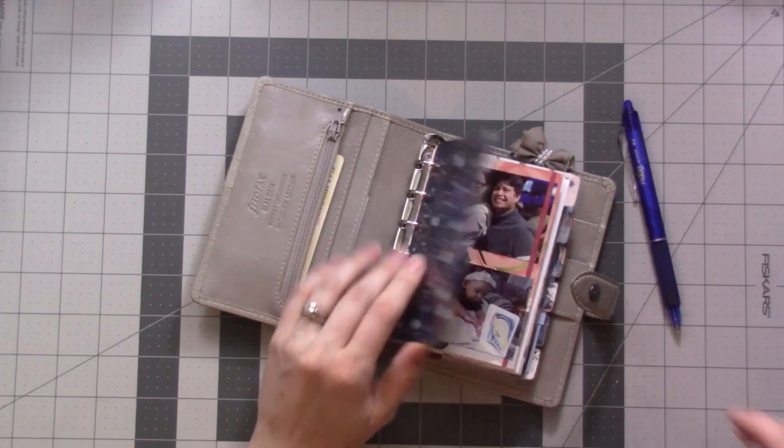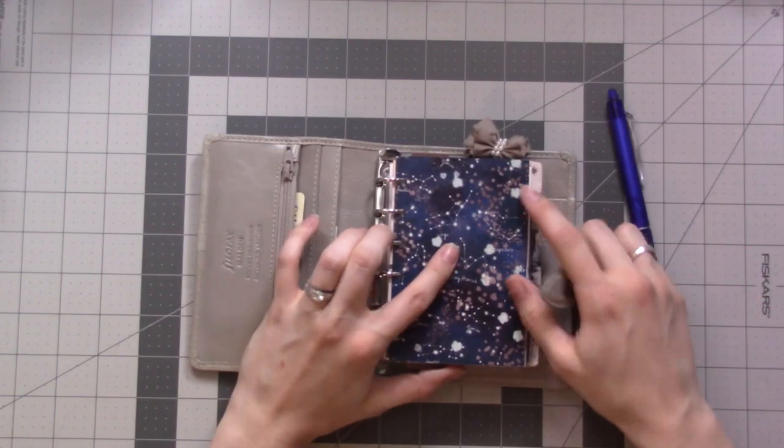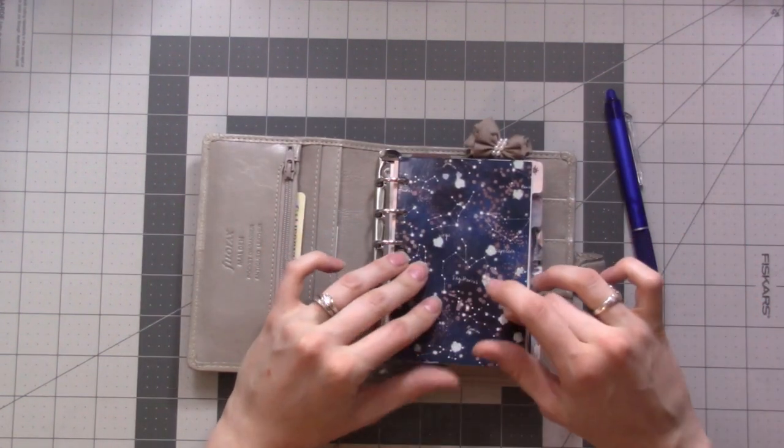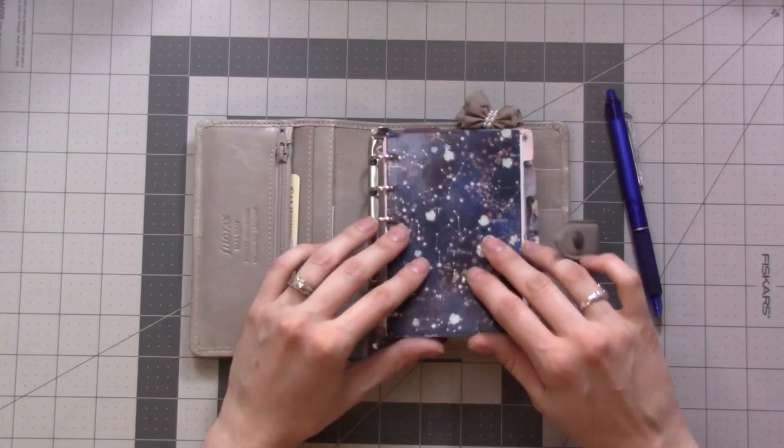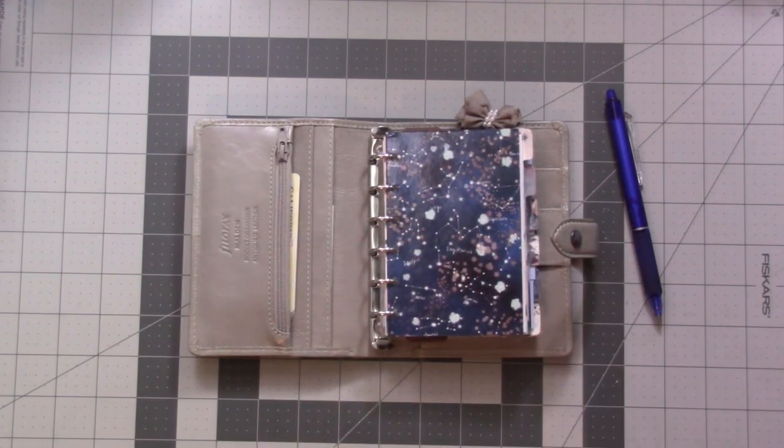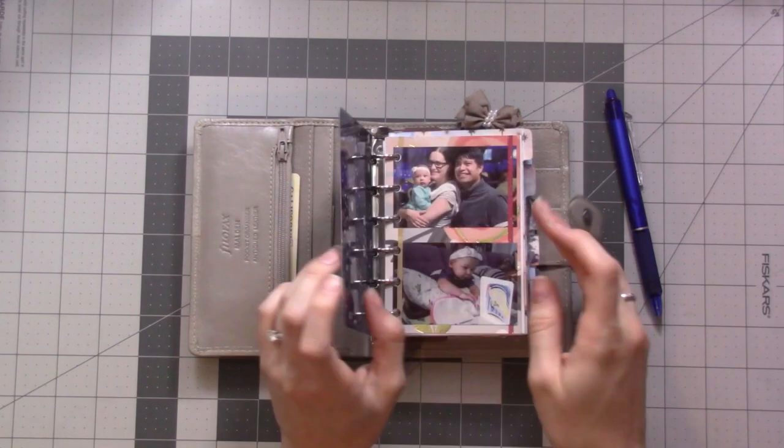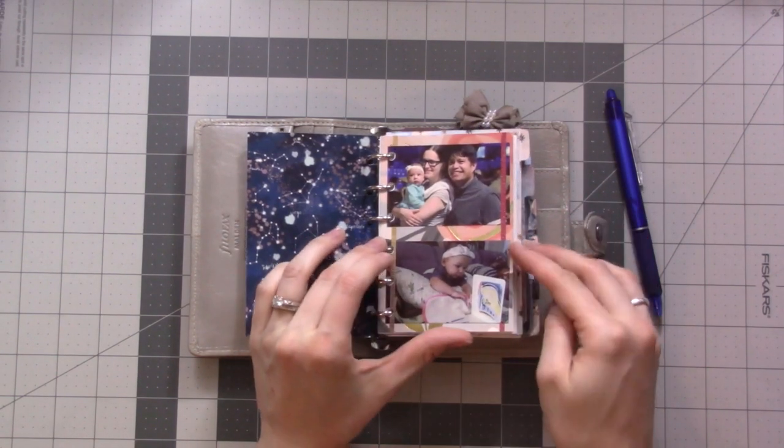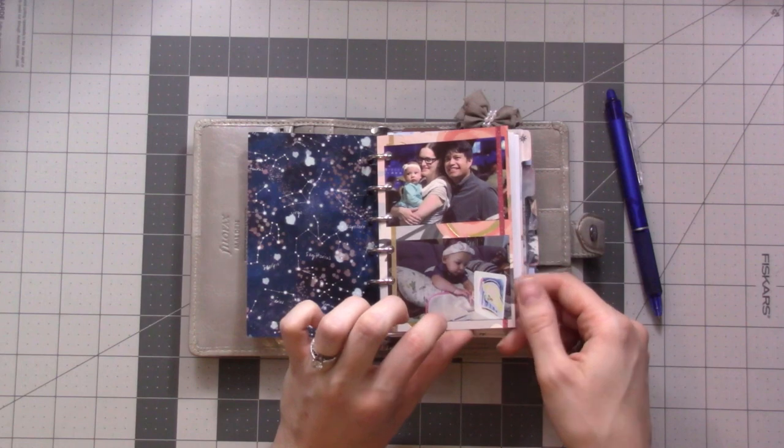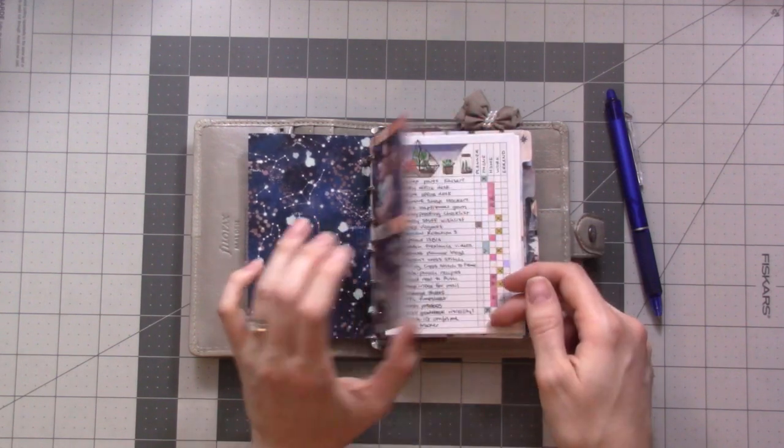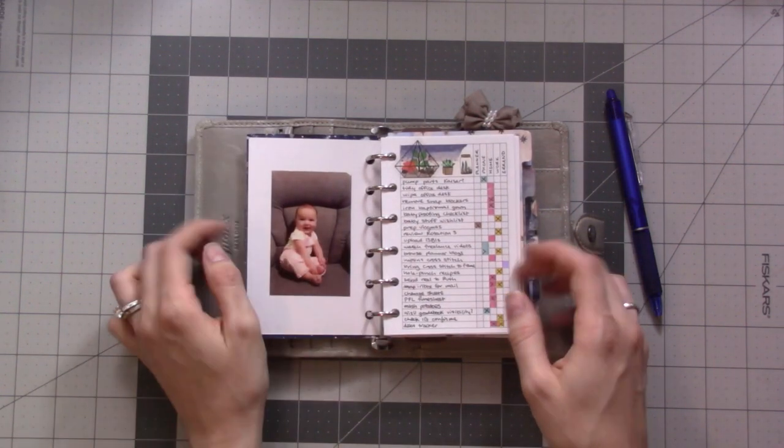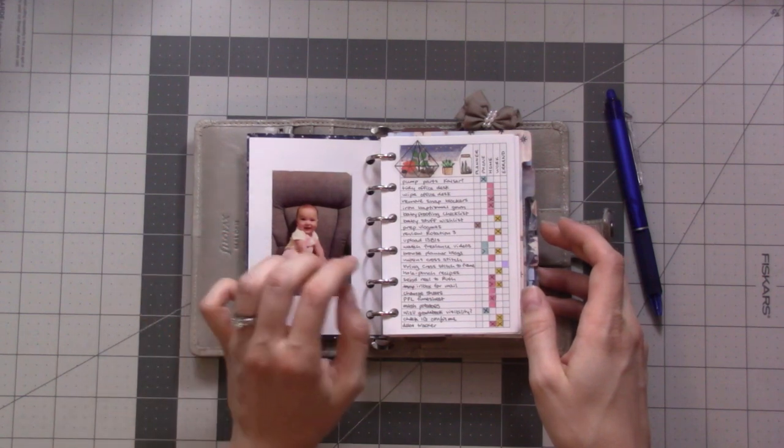These are the same tabs that I got way back in my original ring planner haul video. This is just like a dashboard. I got a sprocket for my birthday, so there's some pictures of my baby so that whenever I'm looking in my planner she's there and smiling and reminding me that she's awesome. This is what I do it all for.